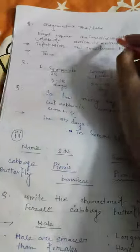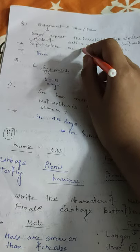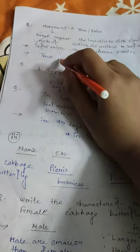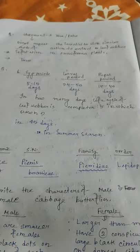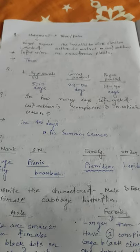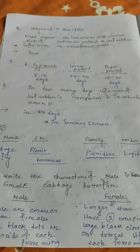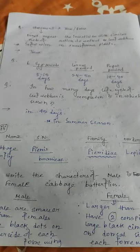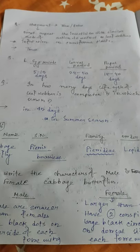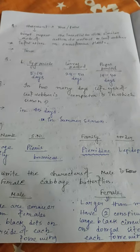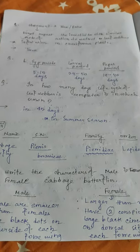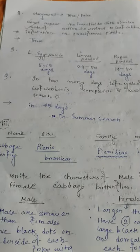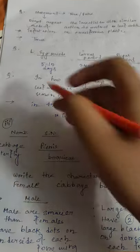Do not repeat insecticides with a similar mode of action to control leaf webber infestation on cruciferous plants. Applying the same insecticides repeatedly on the same field will cause the pest to develop resistance against that particular insecticide.